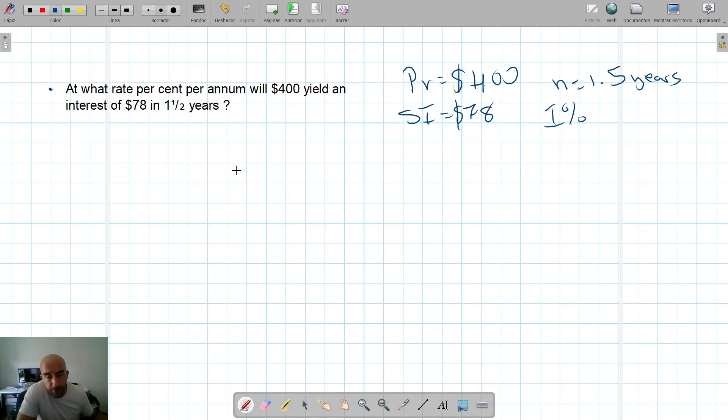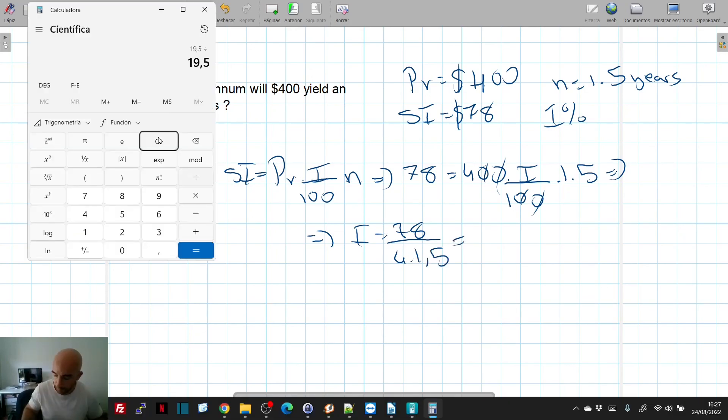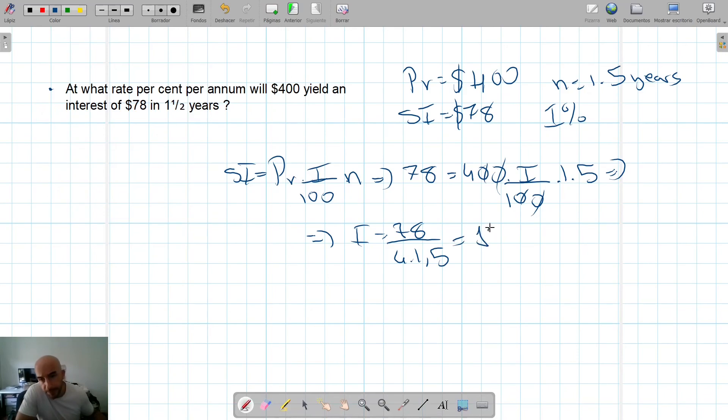So, the formula is SI equals PV times I divided by 100 times N. If you do enough exercises, you already know this formula. So, SI is 78. PV is 400. I is the thing I need to know, 100, and N is 1.5. So, I equals 78 divided by 4 times 1.5, which is 13 percent. The I is 13 percent.